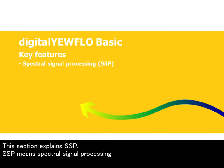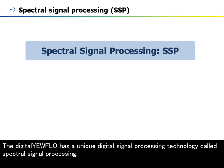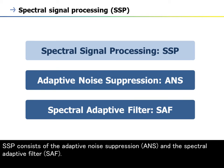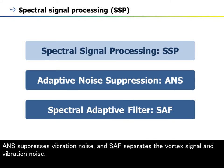This section explains SSP. The Digital EarFlow has a unique digital signal processing technology called spectral signal processing. SSP consists of the adaptive noise suppression, ANS, and the spectral adaptive filter, SAF. ANS suppresses vibration noise, and SAF separates the vortex signal and vibration noise.